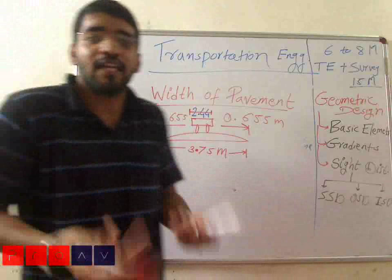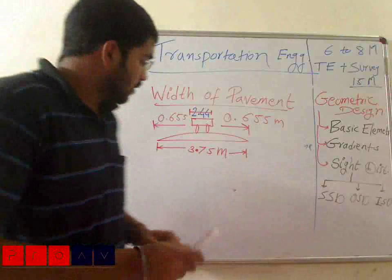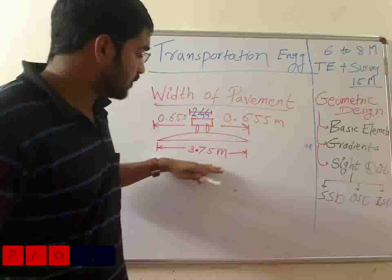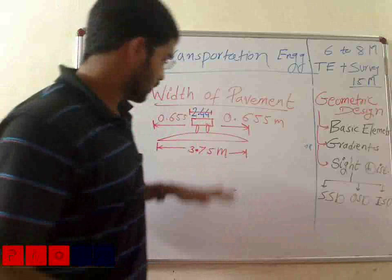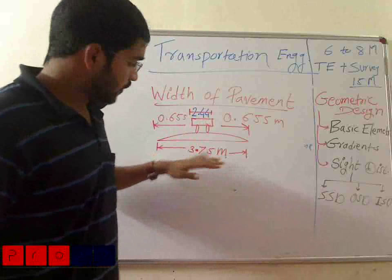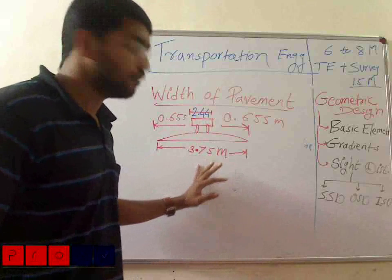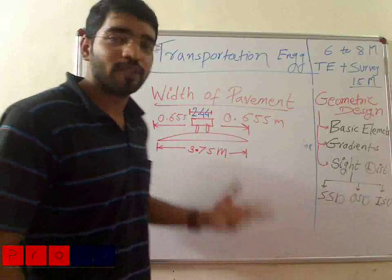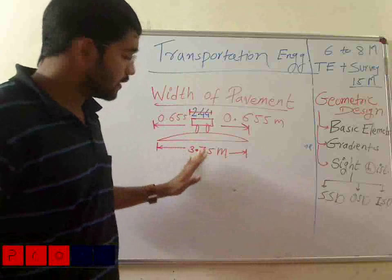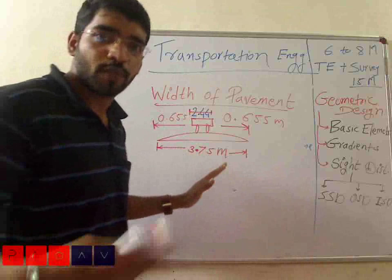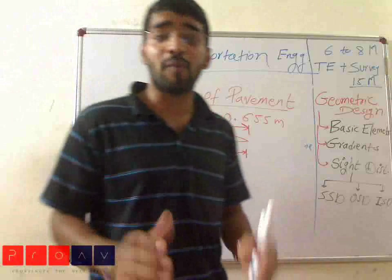Now suppose we have a multi-lane road. In case of a 2-lane road, you might think 3.75 × 2, but that's not how it works. For a 2-lane road, instead of taking 3.75, take just 3.5 meters. So 3.5 × 2 = 7 meters will be the width of a 2-lane road. For a 3-lane road it will be 3.5 × 3, for a 4-lane road 4 × 3.5 — so it should be multiples of 3.5. This is for multi-lane roads.